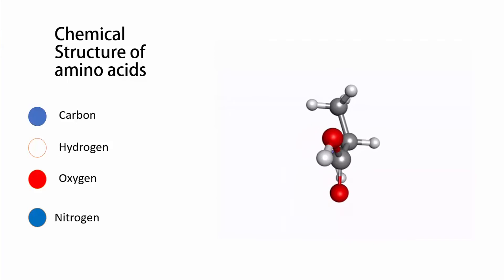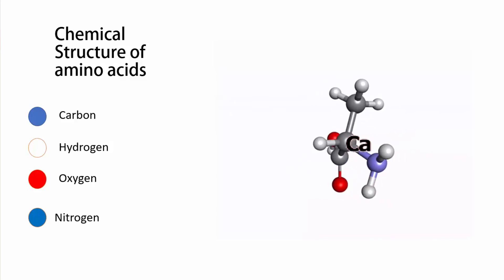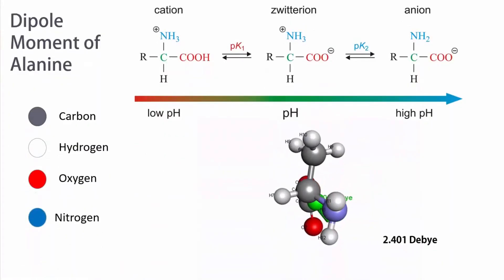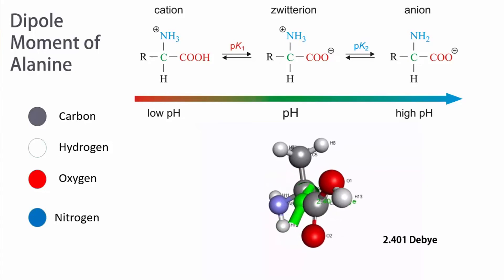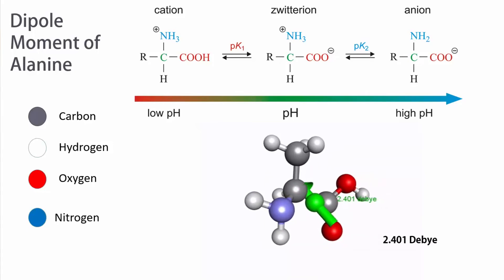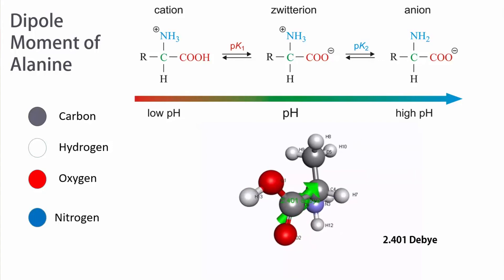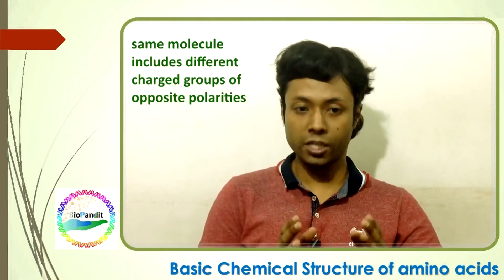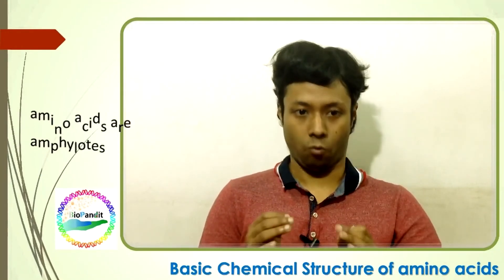Every amino acid molecule has a carboxyl group and an amino group, both making a single covalent bond with the C-alpha atom in the middle. The interesting thing is, in physiological pH range, both the carboxyl group and the amino groups of amino acids are completely ionized. This ionization causes the amino acid to act like a dipole, having both the chemical properties of acid and base. For example, for alanine — one of the 20 amino acids — you can see in this video the direction and magnitude of alanine's dipole moment. This chemical state of having charged groups of opposite polarity in the same molecule is known as the zwitterionic state. Because of this property, amino acids are known as ampholytes.